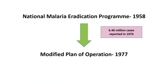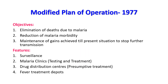In 1976, there was a resurgence in malaria cases, with more than six and a half million cases in India alone. This necessitated a modification of plans, and the Modified Plan of Operation was started in 1977.